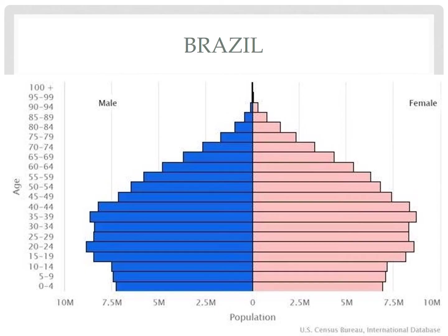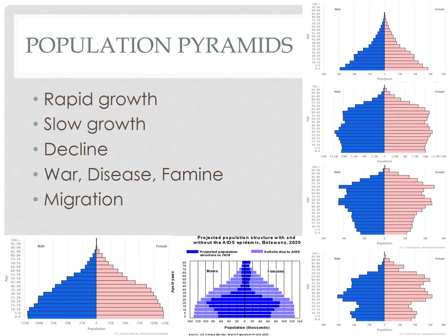In Brazil, the biggest cohort is in the working ages. This means that there are lots of workers, which could mean that the country is about to undergo rapid improvements in economic development. Population pyramids are incredibly useful because they can reveal a country's rates of birth, death, and migration.